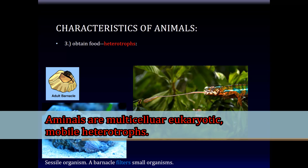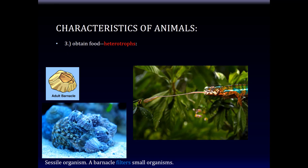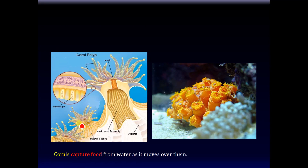There are no autotrophs or photosynthetic animals — they all depend on other living things for food. Even a barnacle is a heterotroph; its mouth, so to speak, opens and it puts out its filters to capture small organisms. So all animals must obtain their food from other living things.